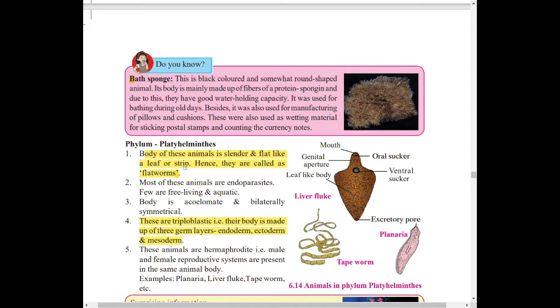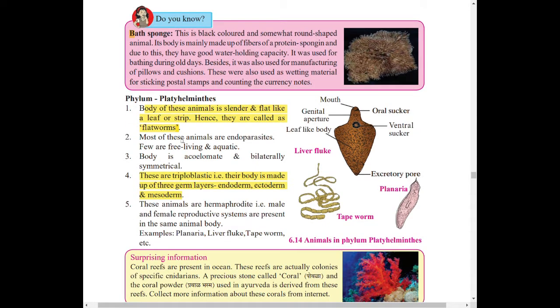Then Platyhelminthes. In case of Platyhelminthes, the definition of flatworms and endoderm, ectoderm, and mesoderm. They have these three layers, that is why they are called triploblastic.